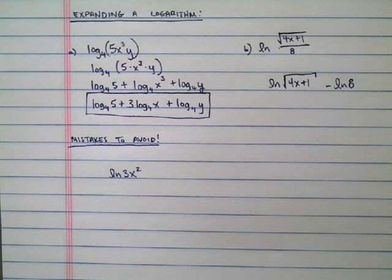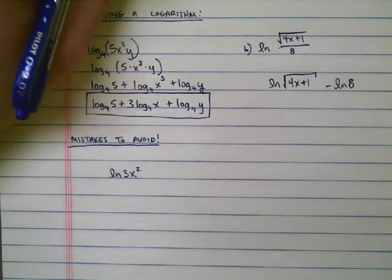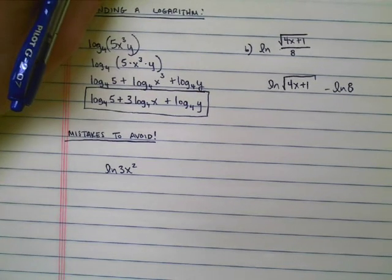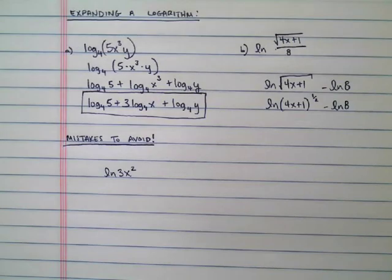Now I've got a square root so I'm not quite done yet. I want to change this around a little bit if I can. You see the square root of anything is actually the same thing as raising it to the 1 half power. So I can rewrite this as the natural log of 4x plus 1 to the 1 half power minus the natural log of 8.